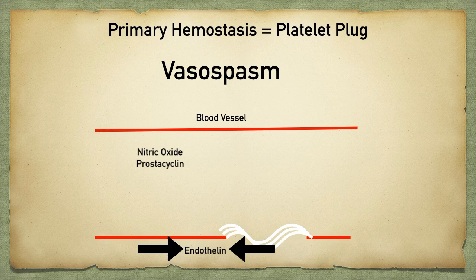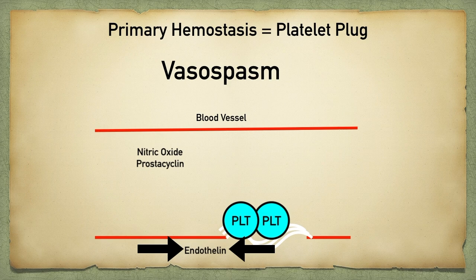Over that injured site, we have collagen exposed. We don't have endothelial cells there, and if we don't have endothelial cells there, then we're not going to have the release of nitric oxide or prostacyclin. So as platelets travel over that injured site, they're going to be more inclined to bind to that collagen. Also remember that nitric oxide and prostacyclin serve to relax the blood vessel, so their absence over the injured site leads to vasoconstriction, which helps reduce some of the bleeding.